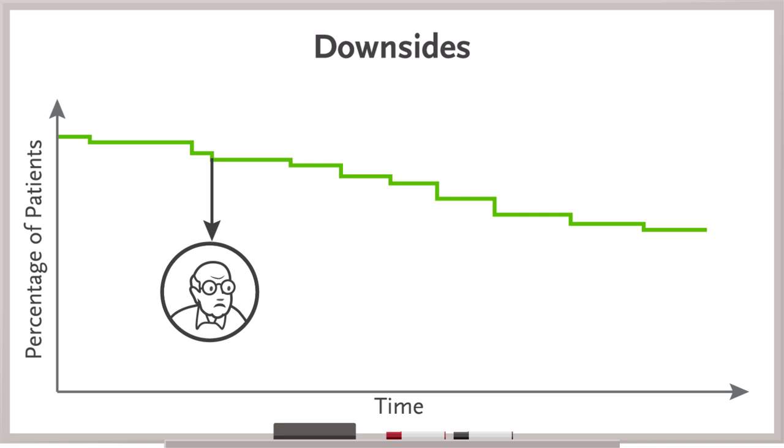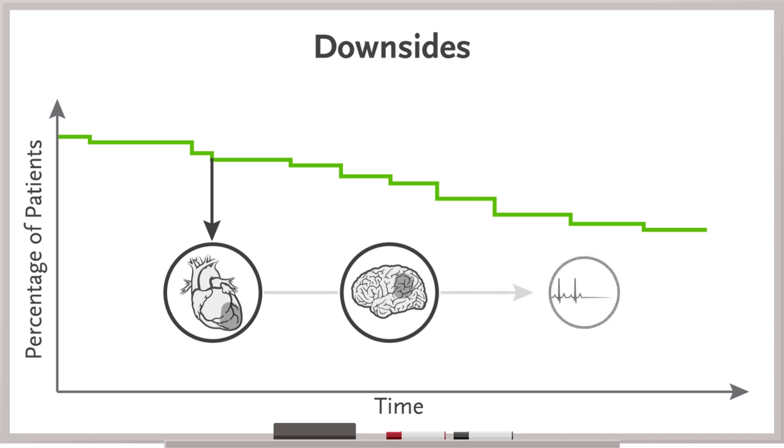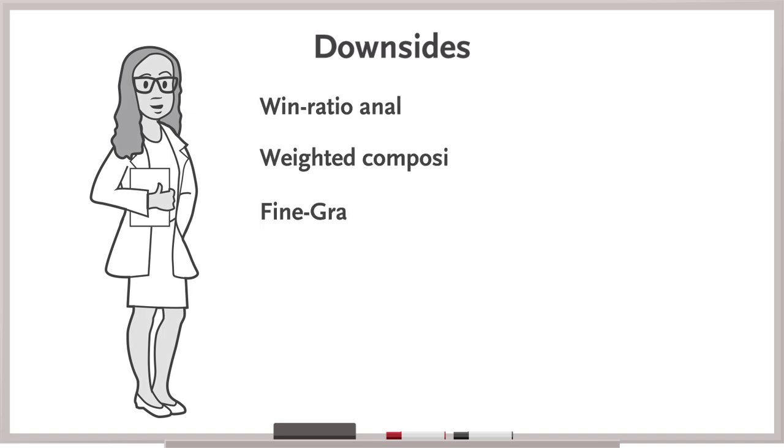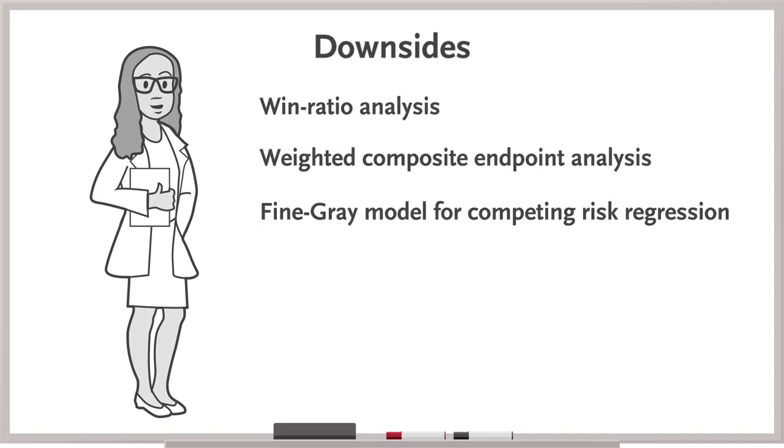Imagine in the atherosclerosis trial, if one participant has an MI and then a stroke and ultimately dies, only the time to the first event contributes towards the primary outcome for that person. There are statistical approaches that aim to overcome some of these issues that we won't get into here.